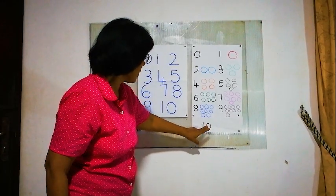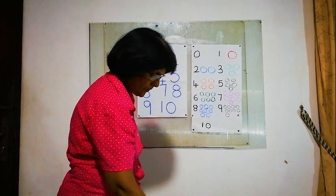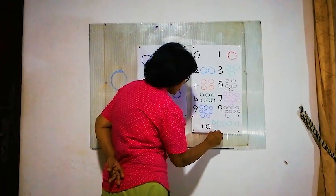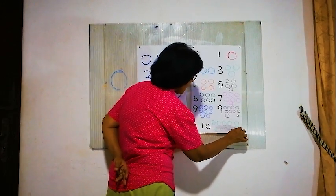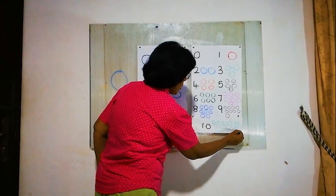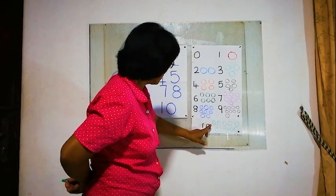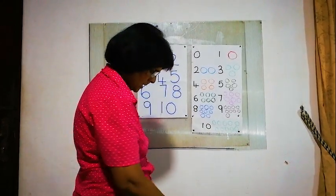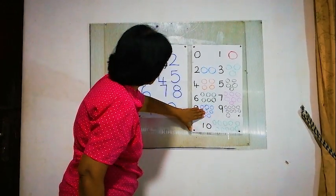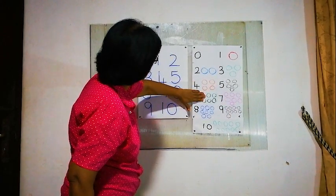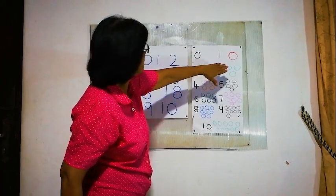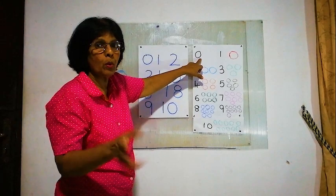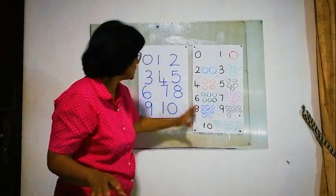Here the last number is 10. For number 10, we'll draw 10 balls: 1, 2, 3, 4, 5, 6, 7, 8, 9, 10. Is it correct? Yes — 10 balls here. 9 balls here. 8 balls here. 7 balls. 6 balls. 5 balls. 4 balls. 3 balls. 2 balls. 1 ball. Nothing.